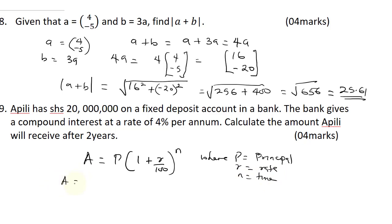Having established this, our A is going to be 20 million into 1 plus 4 over 100 raised to the power N. So A is going to be 20 million, all multiplied by 1.04 raised to the power 2. When you punch this on your calculator, you are going to get 21,632,320. So this is the amount you will get after two years.